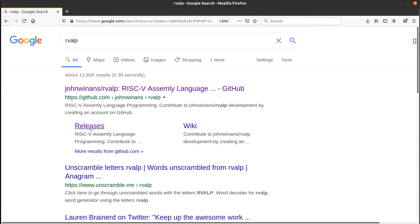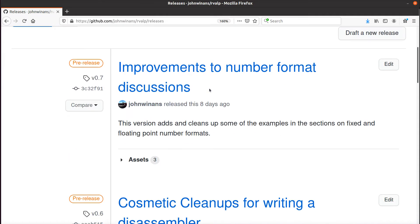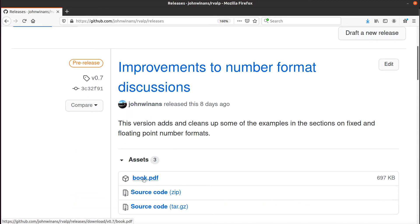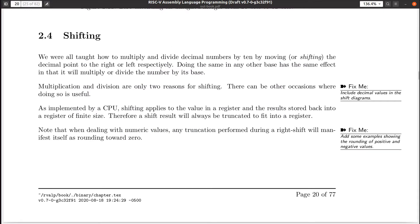If you want your own copy, go to Google, search for RVALP, click on releases, you're in GitHub, open the assets, and book.pdf right there is the file that we're looking at right here. Okay, so what does it mean to shift a binary number?